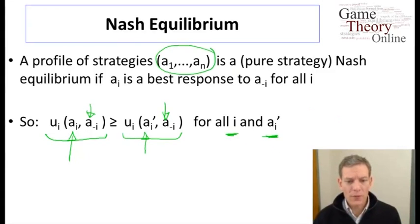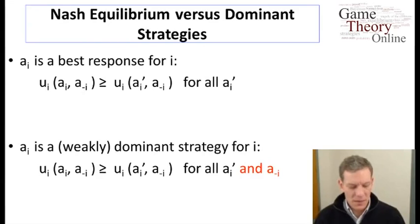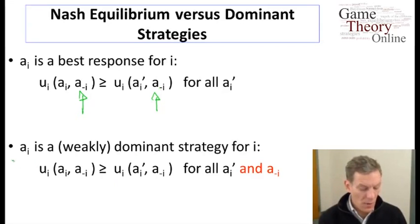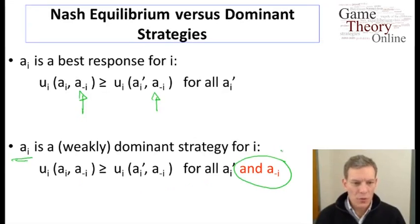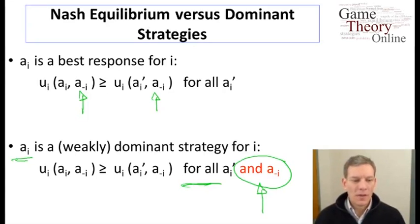It's important to emphasize the difference between Nash equilibrium and dominant strategies. In Nash equilibrium and best responses, we're holding fixed the A minus i of the other players, whereas with dominance, we want a particular action to be best no matter what the other players are doing — it has to be true for all alternative strategies of the other players. A dominant strategy is one where you don't really have to worry about what anyone else is doing — you have something that's clearly best. That's not true in our predator-prey game, where the prey's reaction depended on what the predator was doing.